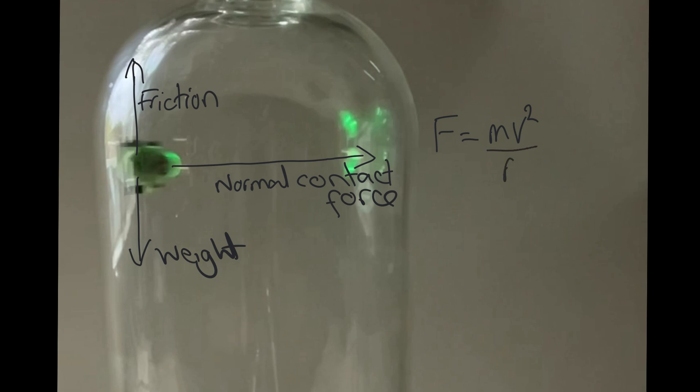This means that if the speed of the car is bigger, which means V is bigger on this side of the equation, then the force required will be bigger. And since it's the normal contact force that's providing this centripetal force, the normal contact force on the car will get bigger.